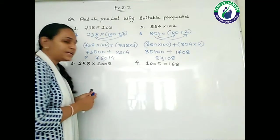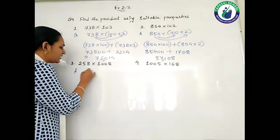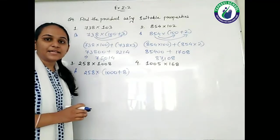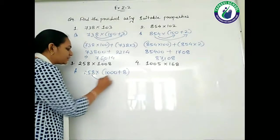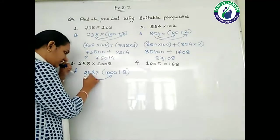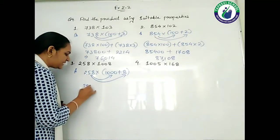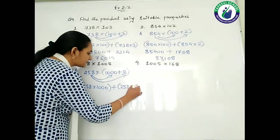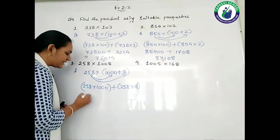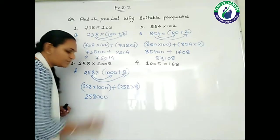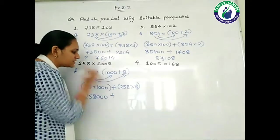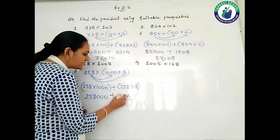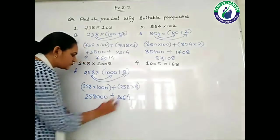Now taking the third question: 258 multiplied by 1008. Can I write 1008 as 1000 plus 8? Yes. Now multiply 258 with 1000 and 258 with 8. So 258 multiplied by 1000 is 258,000. Now 258 multiplied by 8: 8 eights are 64, 8 fives are 40 plus 6 gives 46, 16 plus 4 gives 20 — so 2,064.